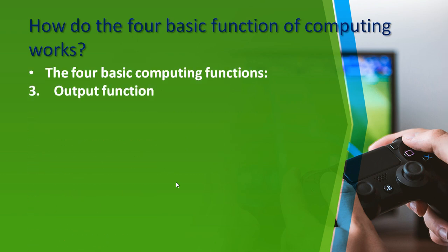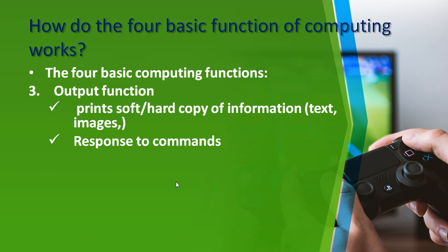After data processing comes the output function — it prints soft or hard copies of information like text and images, and responds to commands. For example, if you typed in Microsoft Word and need to print it for your teacher, you use a peripheral device — the printer. You give the command to print the file, and what the printer produces is the hard copy of information. Whatever you input and then print — that is the output.